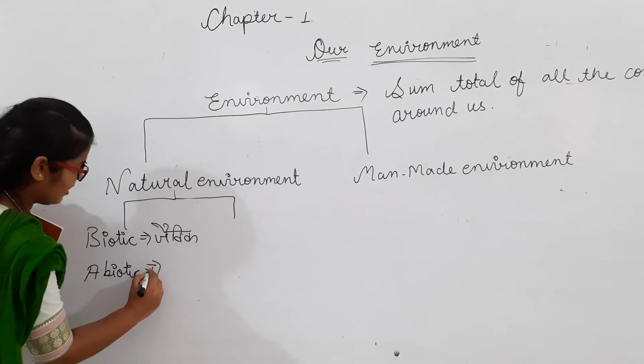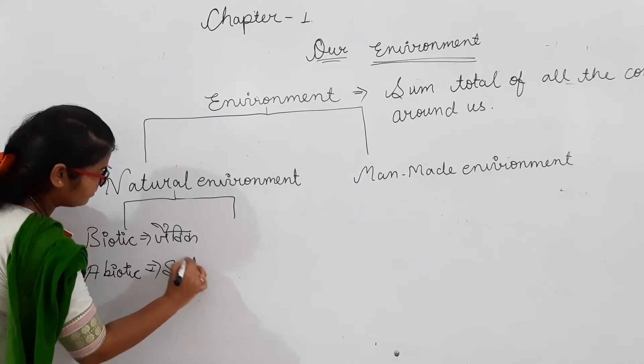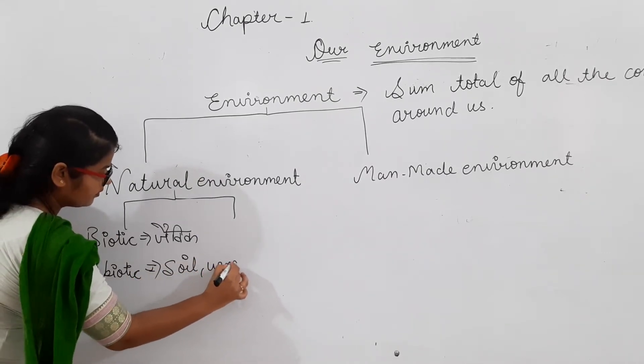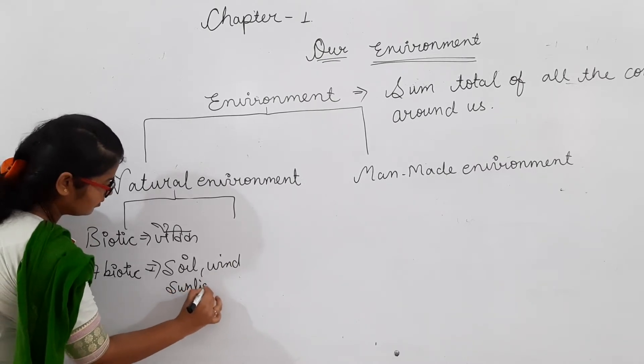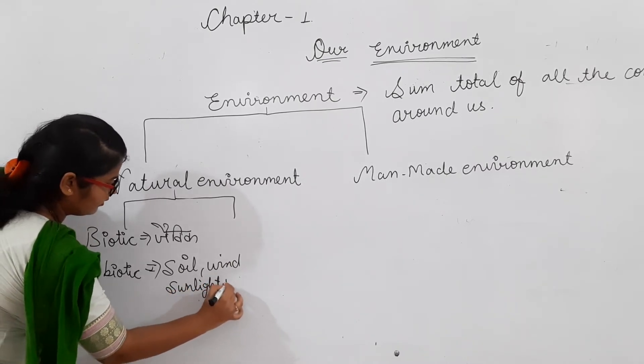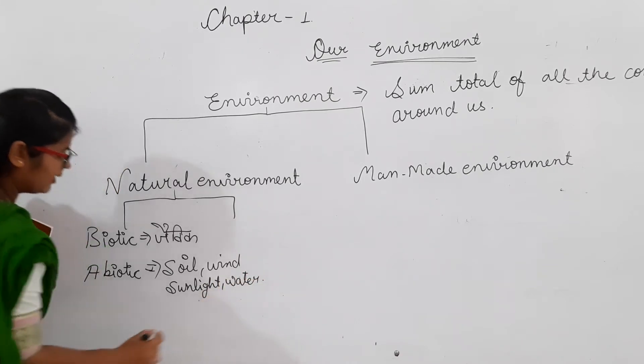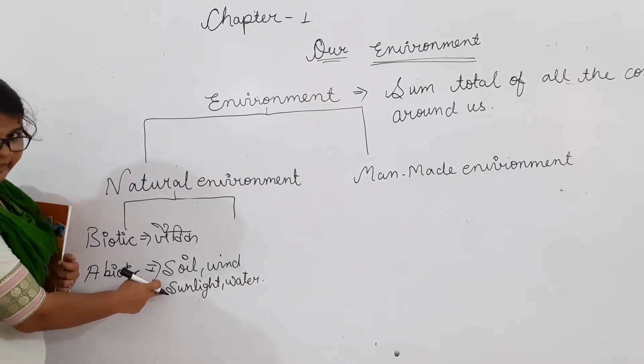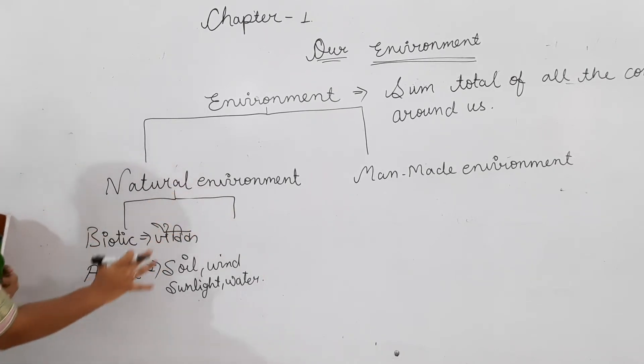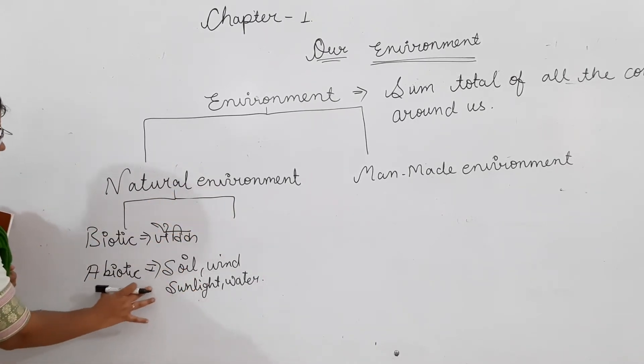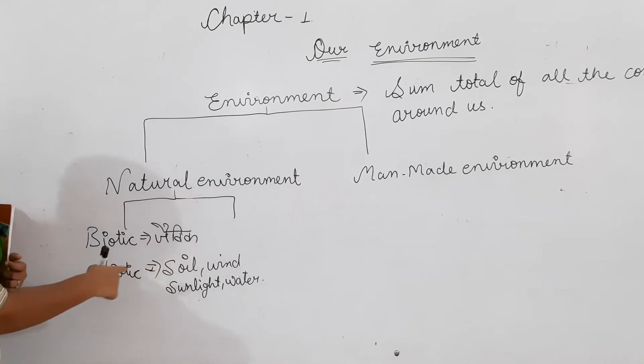Let's take examples. Soil, wind, sunlight, water, etc. These are part of natural environment. These are non-living, abiotic components.